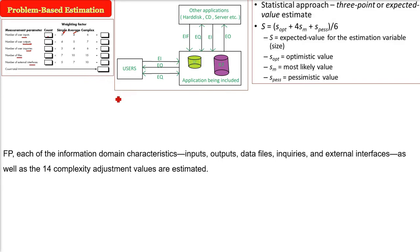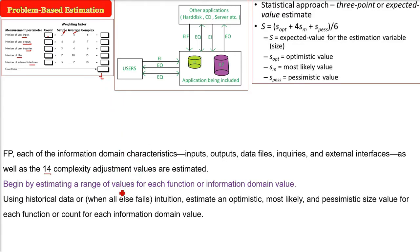This count, then we have the 14 complexity adjustment value factors. We will give from 0 to 5 value, add all these 14 parameters, and there is a formula. We'll use this formula to compute the final value of a function point.